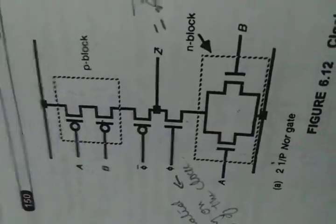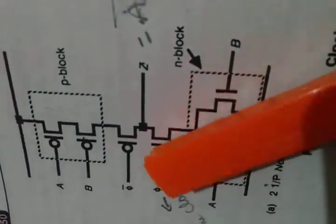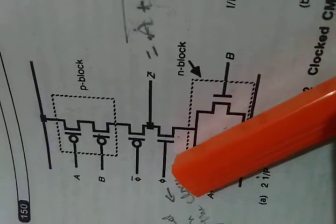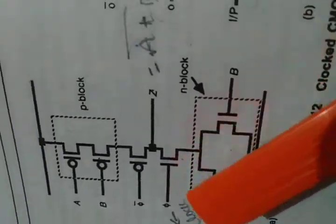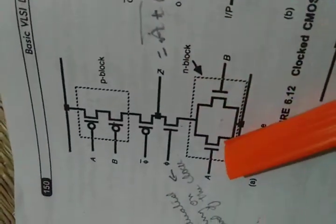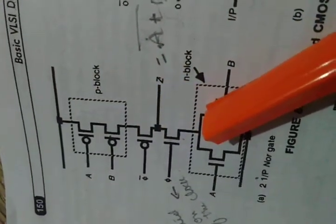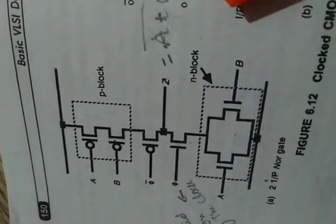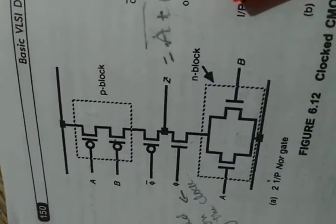How does it work? Suppose phi is 0. When phi is 0, the transistors disconnect either the P or N network from the output, meaning the output remains in the previous state — it is in a hold state.